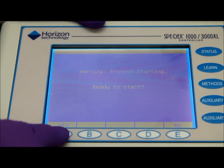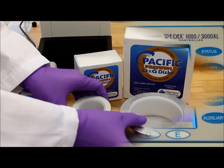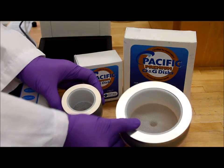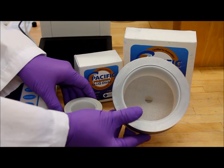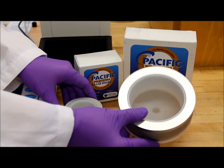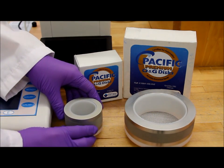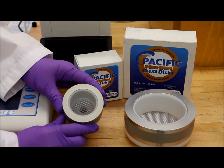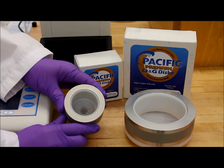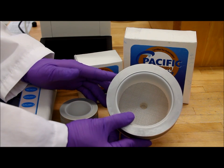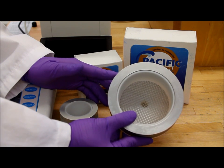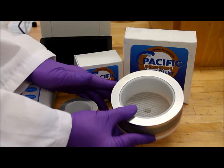So here are our two SPE disc holders. This is a 47mm holder and this one is a 100mm holder. The difference between the two is that the smaller disc holder is more suitable for clean samples, whereas the bigger disc holder can take care of high particulate samples such as influent waste.